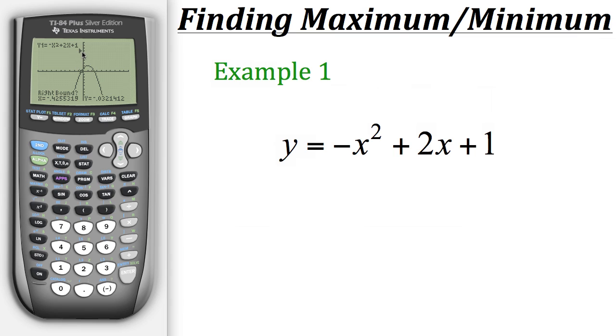Now up top here you may notice this black arrow. Now it's currently pointing to the right indicating that the calculator will look to the right of that arrow for the maximum.